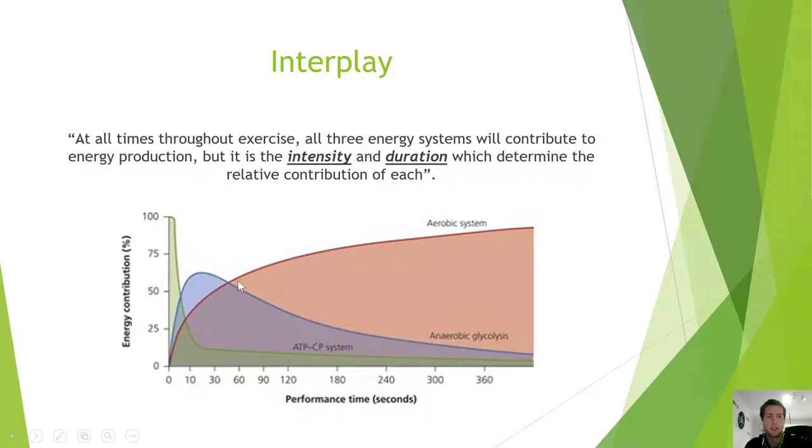That makes sense - for submaximal stuff, the aerobic system is obviously going to stay dominant. Even for maximal stuff, the aerobic system will remain dominant for the rest of activity, even if we get above 100% VO2 max, and I'm going to show you why right now.